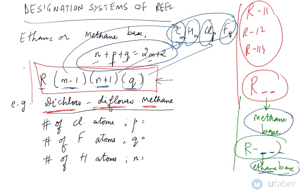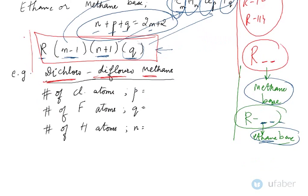Let us see how many chlorine atoms do we have, designated by letter P. It says dichloro, which means you have two chlorine atoms. Number of fluorine atoms: it says difluoro, so Q becomes 2. How many hydrogen atoms do you have? You have no hydrogen atoms, that is zero.